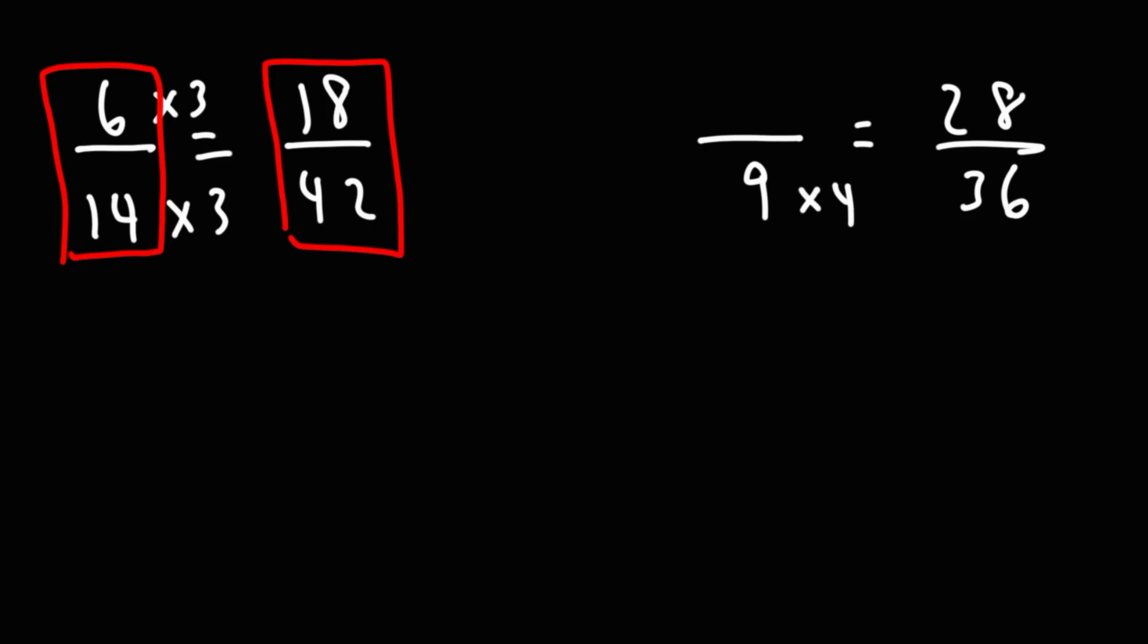The next example, we can see that 9 times 4 is 36, or 36 divided by 9 is 4. So we got to multiply the top number by 4 to get to 28. 28 divided by 4 is 7, so that will give us the answer 7 over 9. So that's a quick and simple way of how you could find equivalent fractions by finding the missing number in the other fraction.